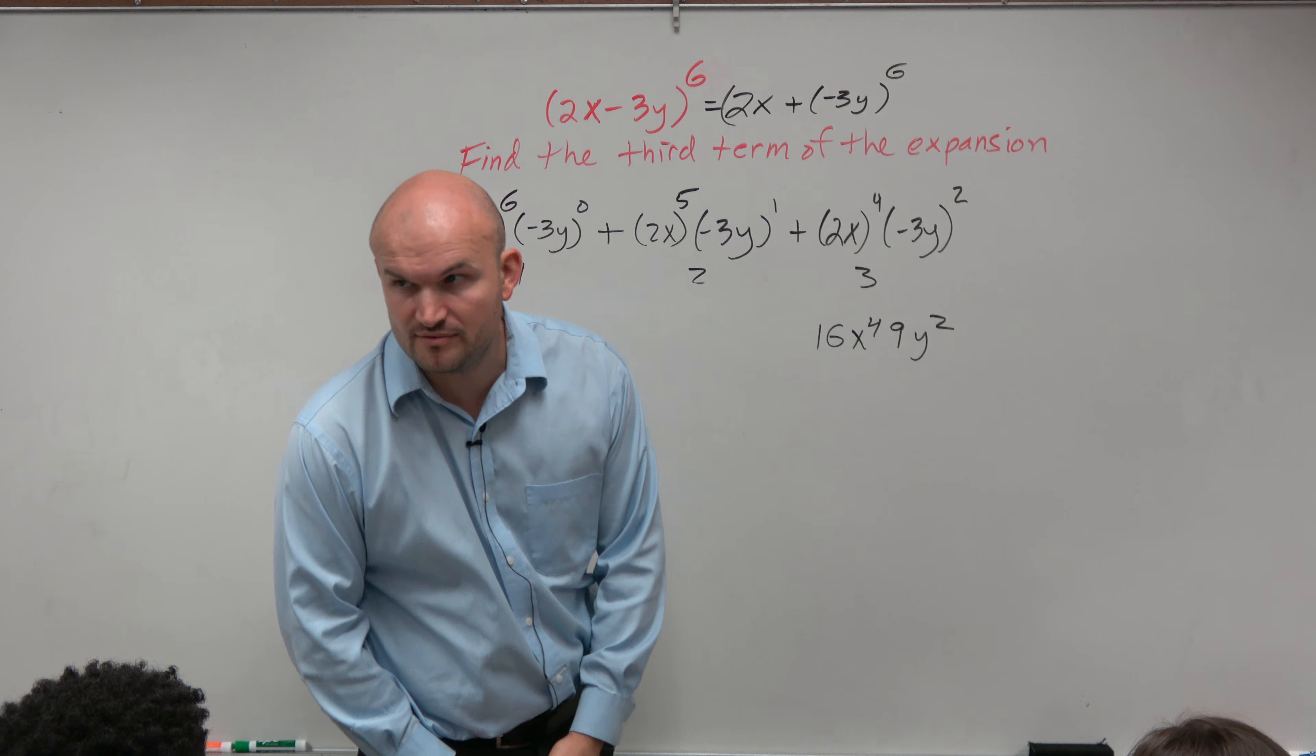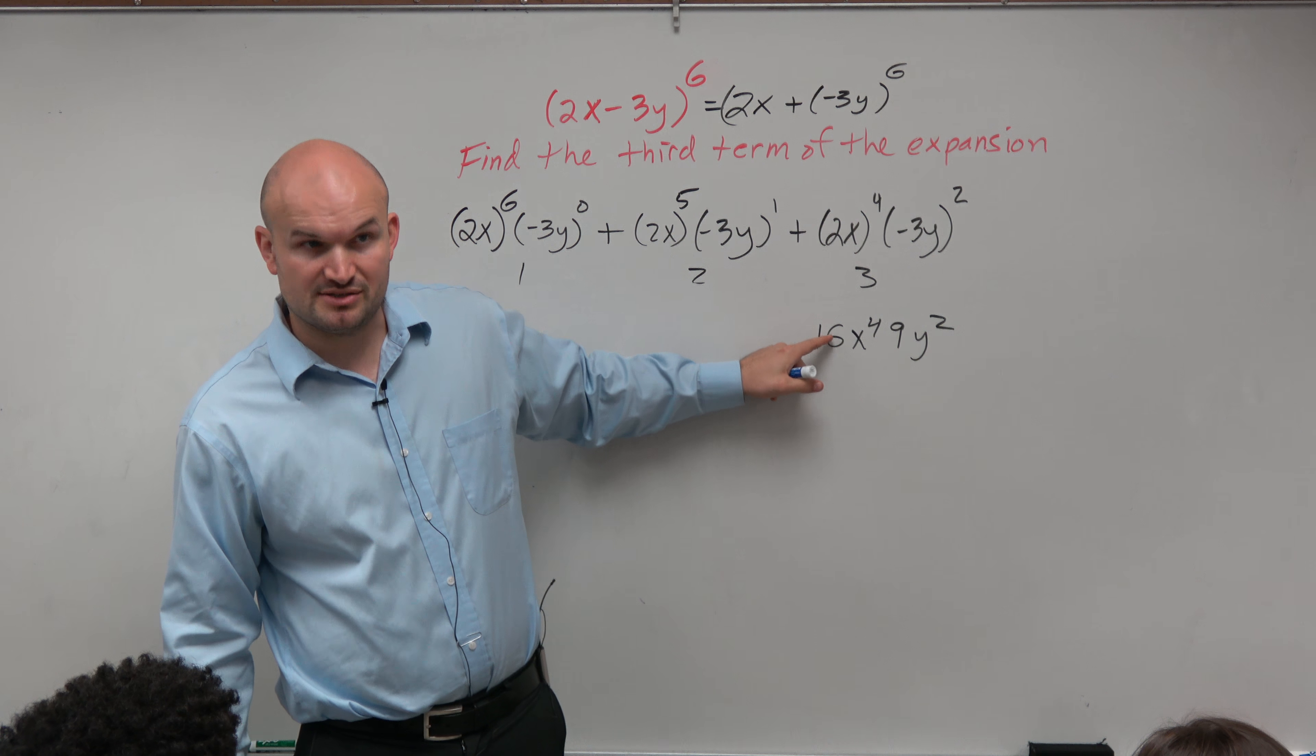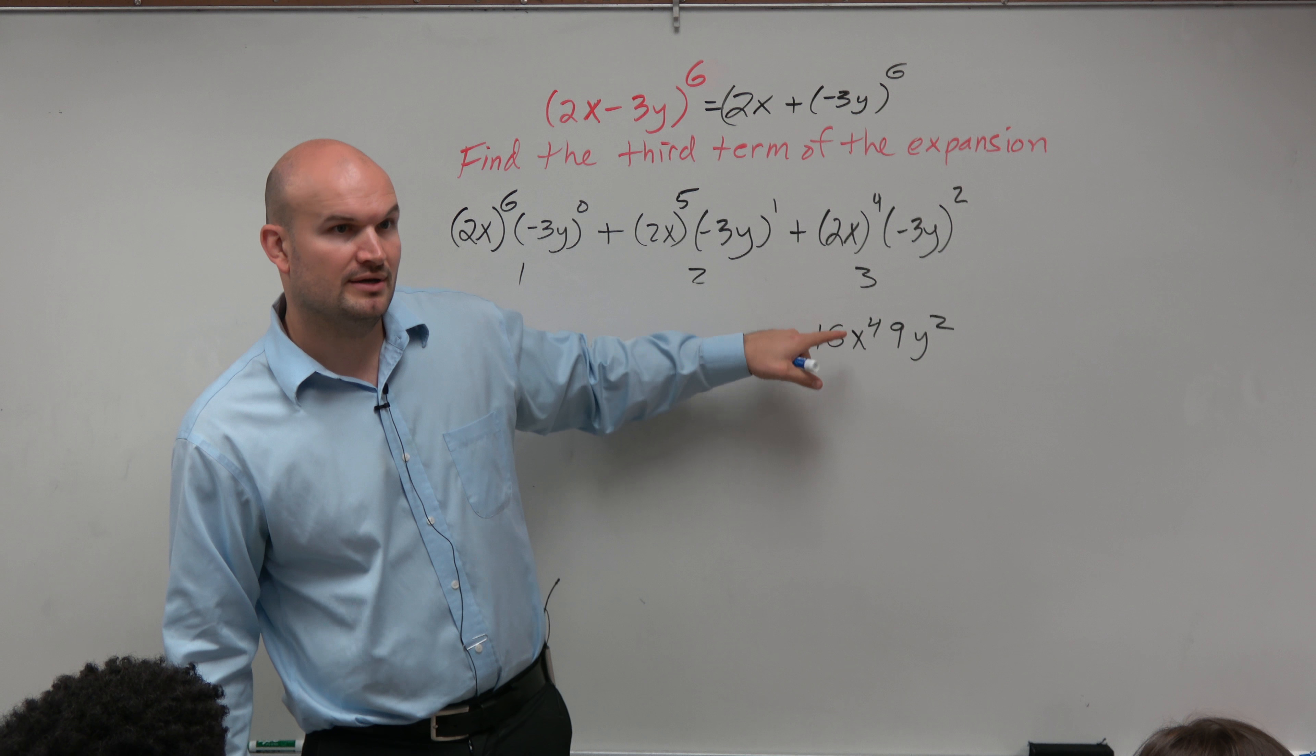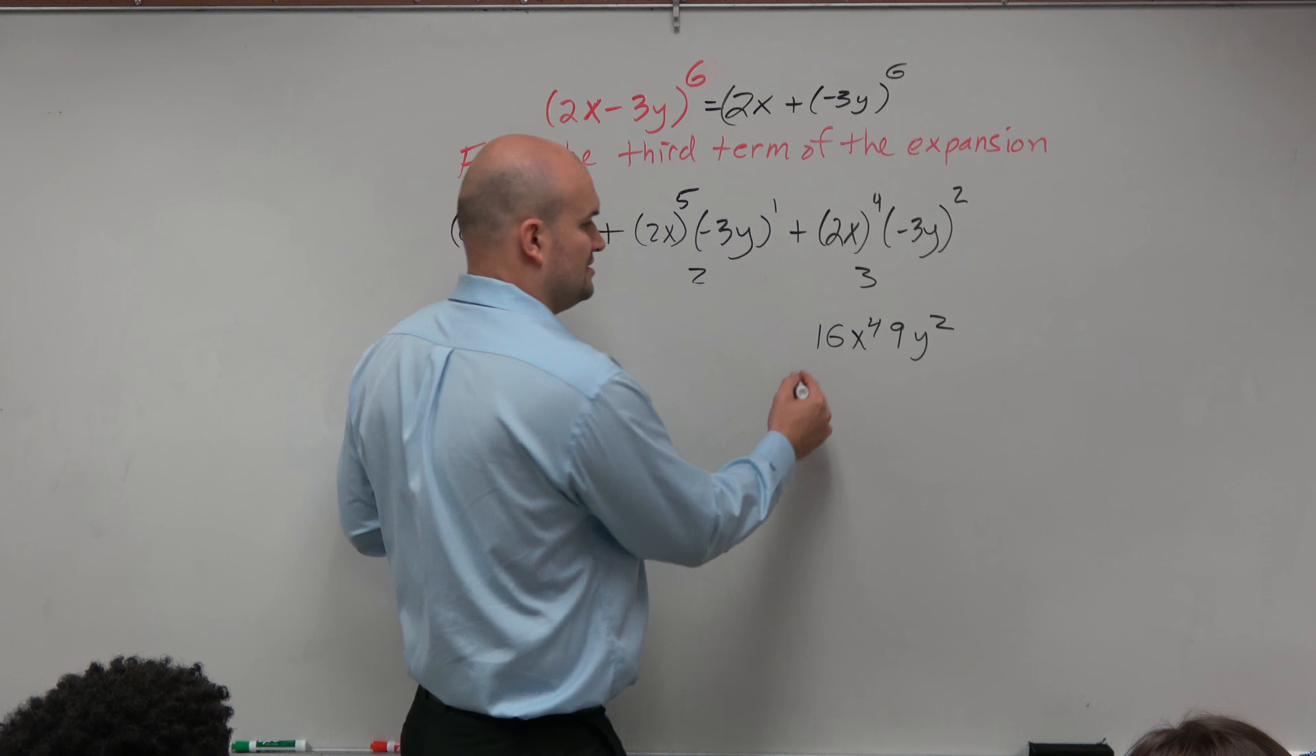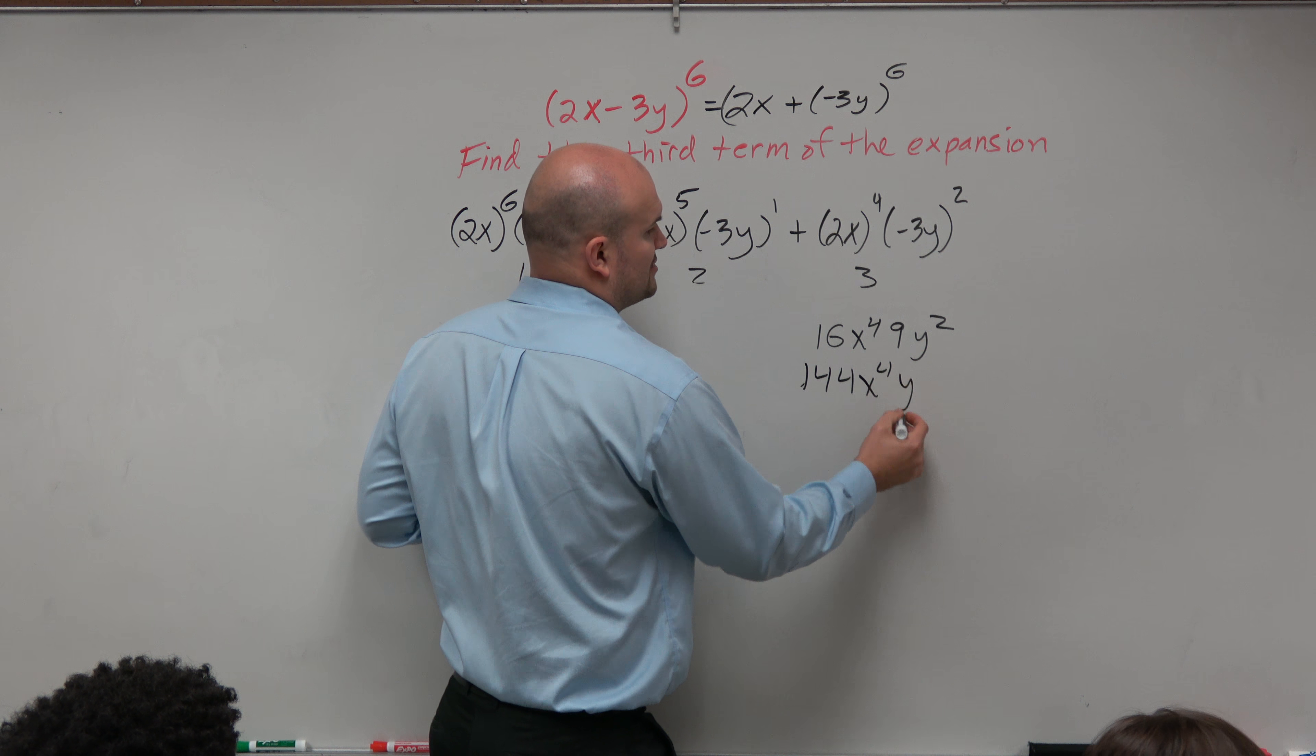So it would be 100 and yes, 9 times 10 is 90, and then you guys still have a 6 left over. 9 times 6 is 54. 54 plus 90 is 144, x to the fourth y squared.